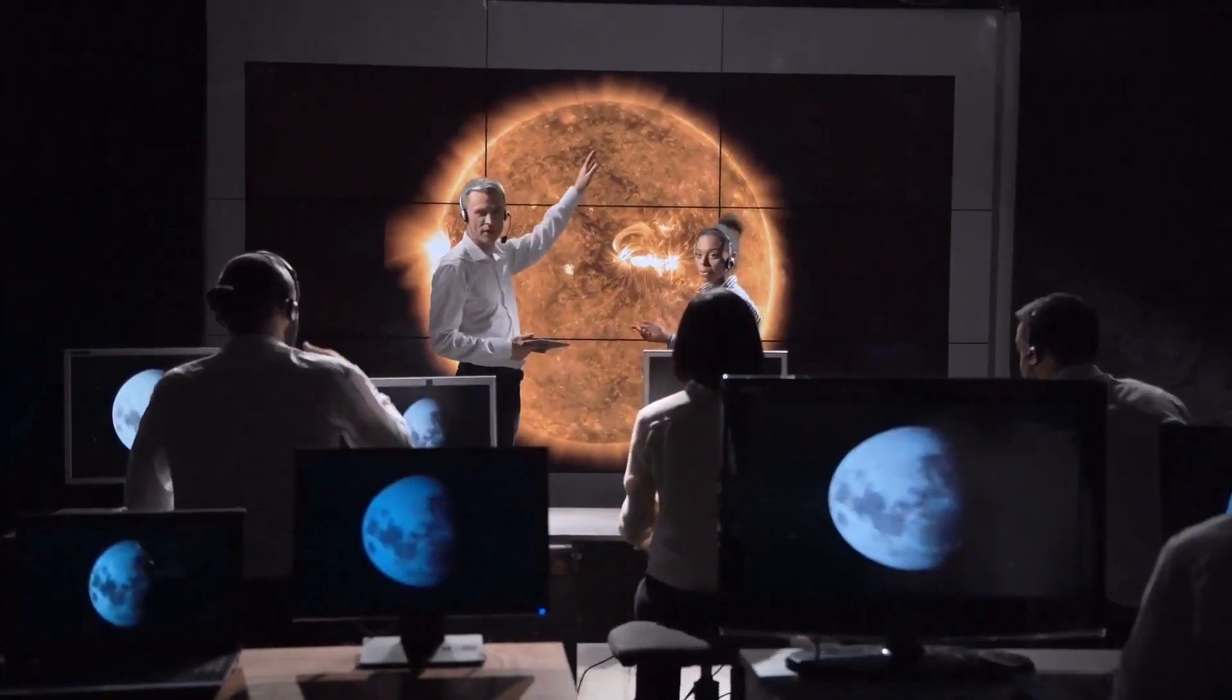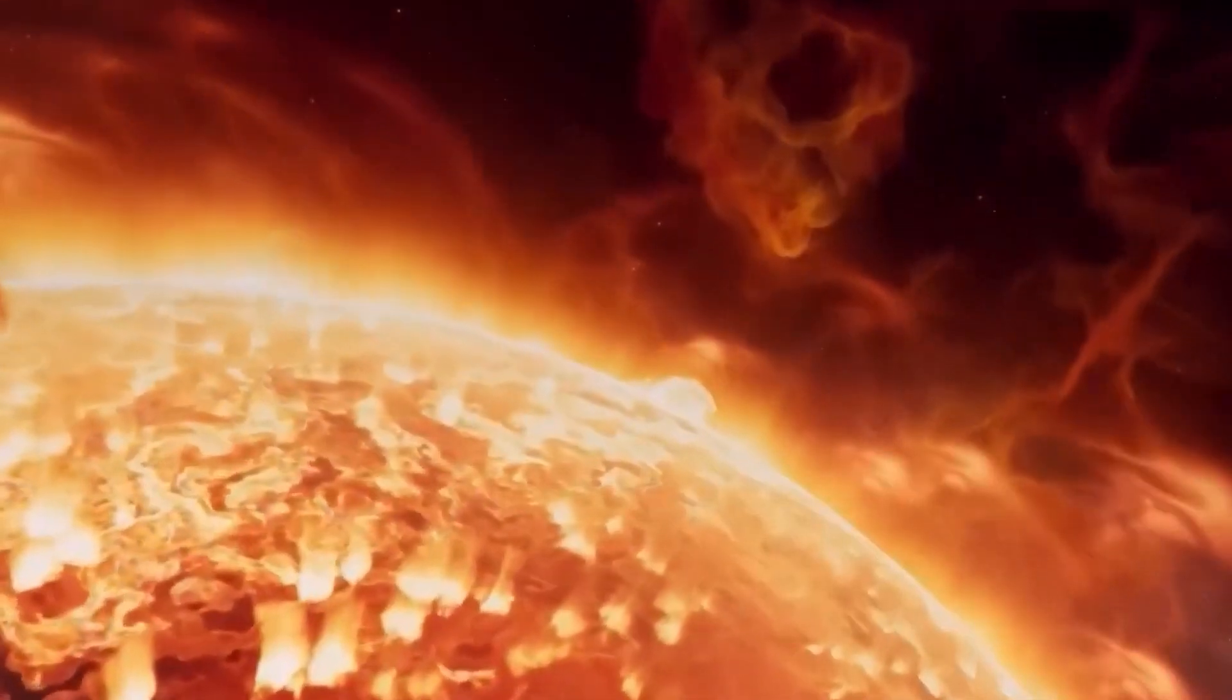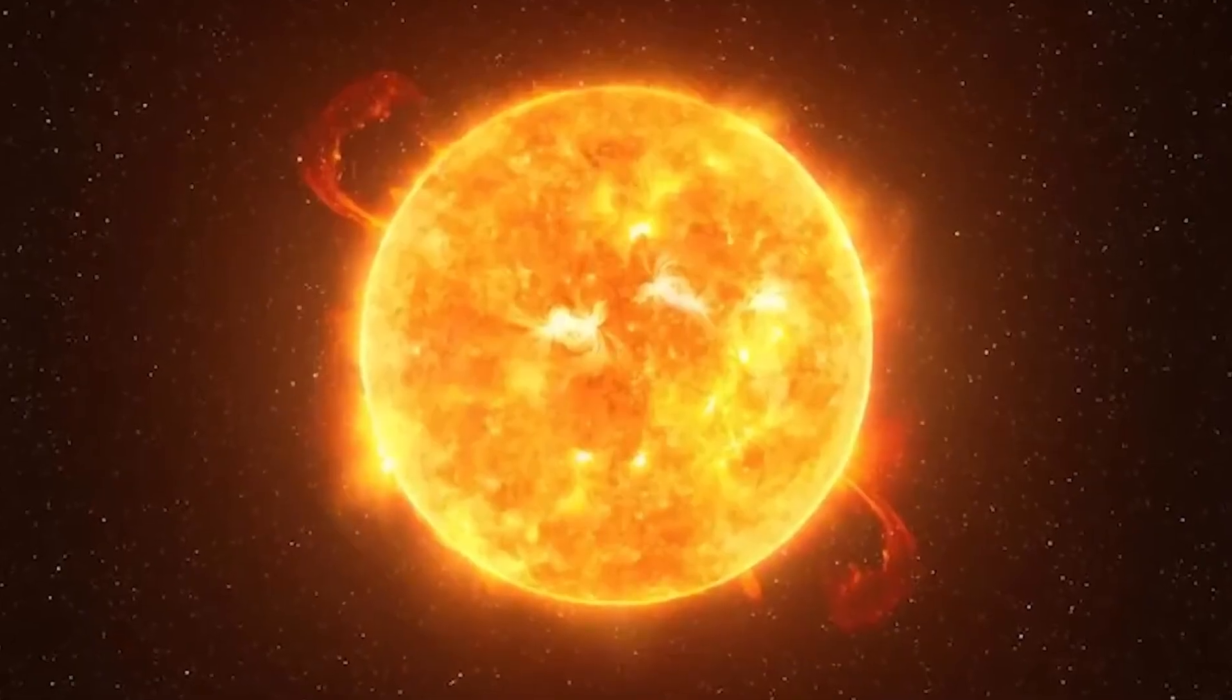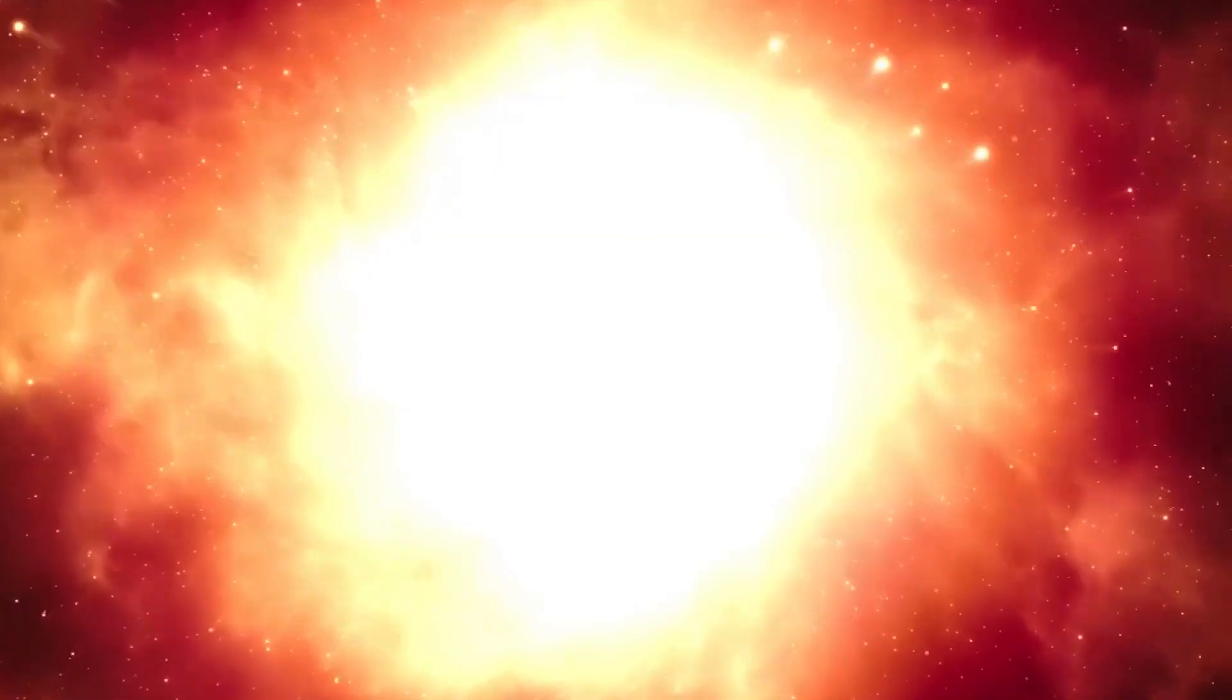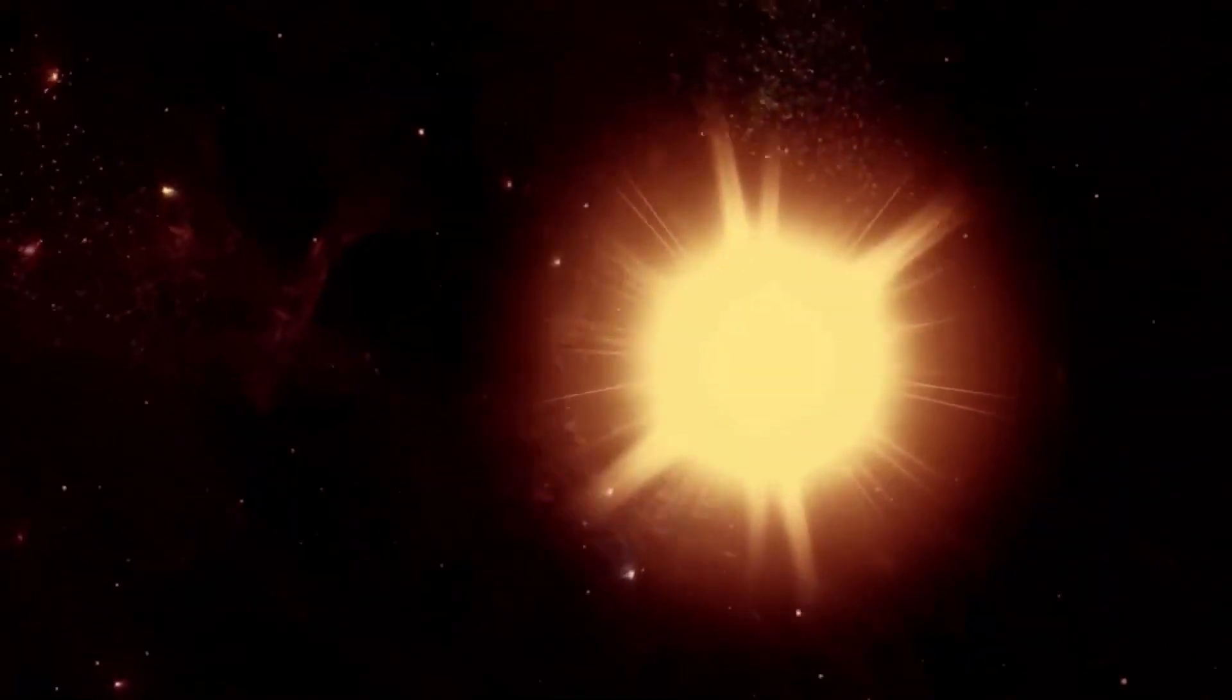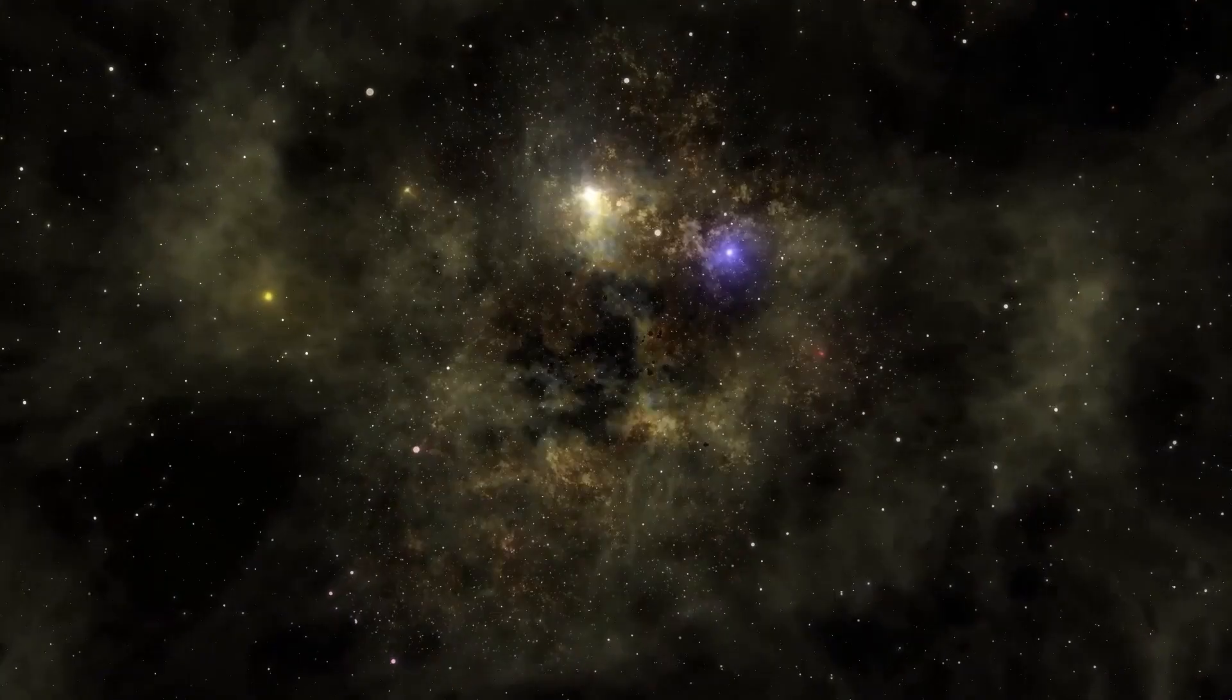Betelgeuse is not the only star with such a wide range of features. The brightness of other stars, like Antares in the constellation Scorpius, changes over time as well. Antares is a bright supergiant star about 700 times the diameter of the sun. It has a mass about 12 times that of the sun.